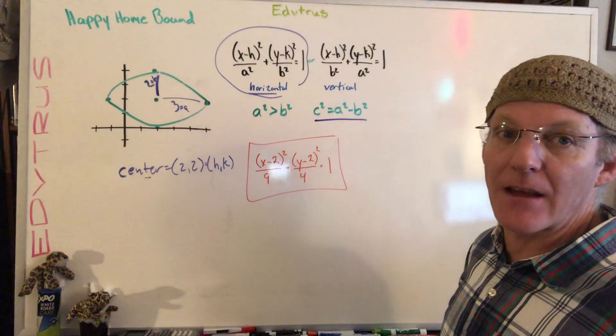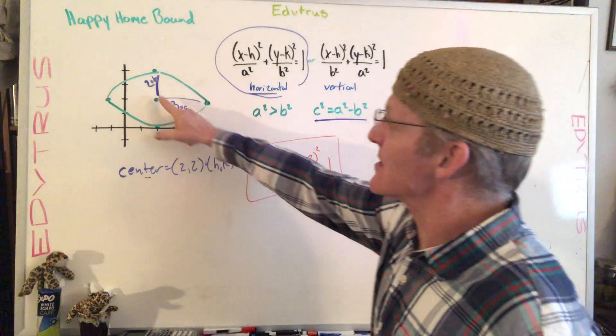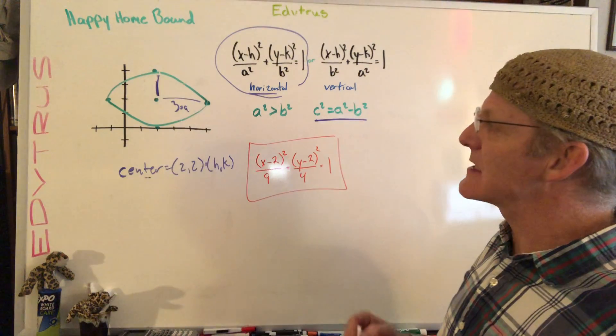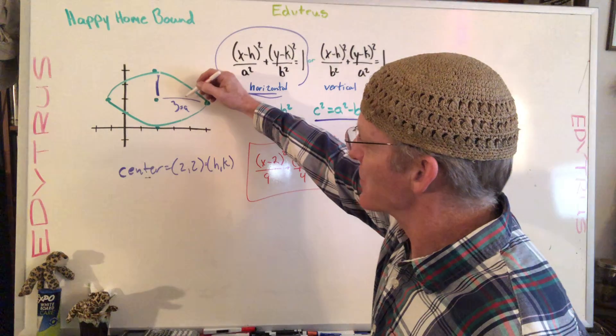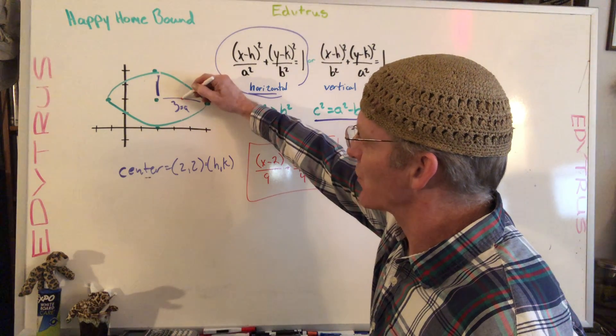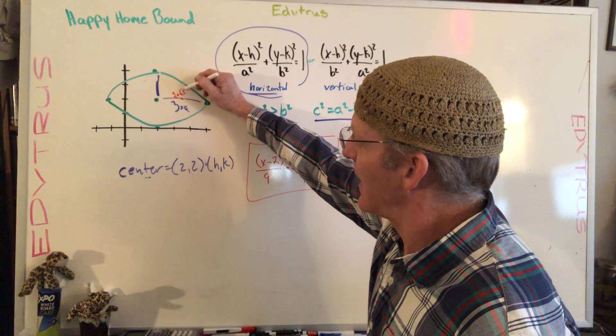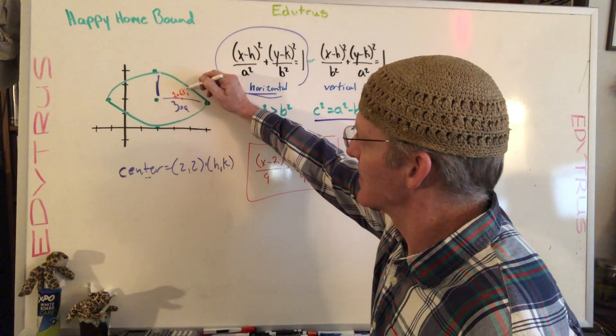So let's just say they didn't tell us this, but they did tell us that the foci was right here at (2 plus the square root of 5) comma 2. Well you can see it's come over 2 and the square root of 5 more - we've already got 2 here.